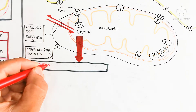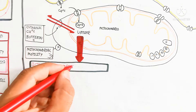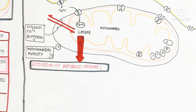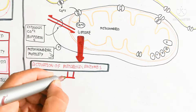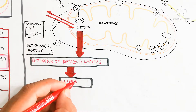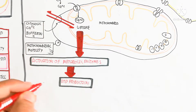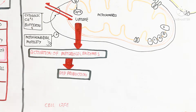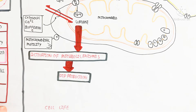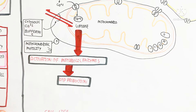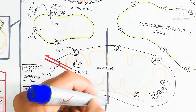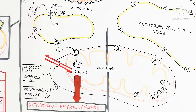Calcium is very important because troponin and myosin are also present in the mitochondria. The uptake of calcium leads to activation of metabolic enzymes, which produces more ATP and allows the cell to survive. Now let's understand what happens in the case of cell death.